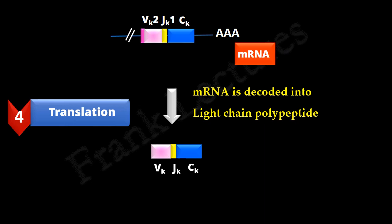So we now understand that in immunoglobulin light chain, variable region is formed by V and J gene segments.